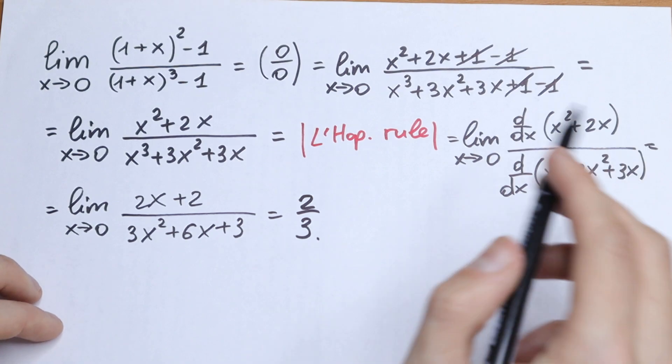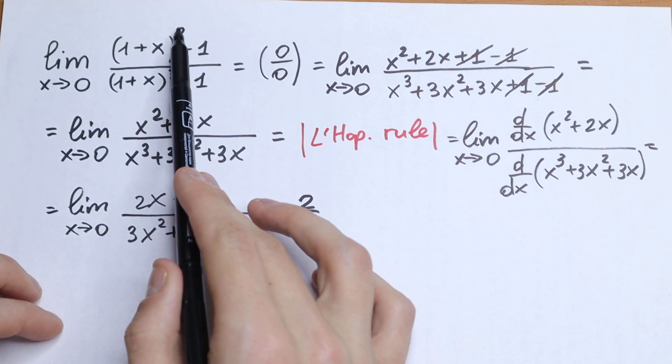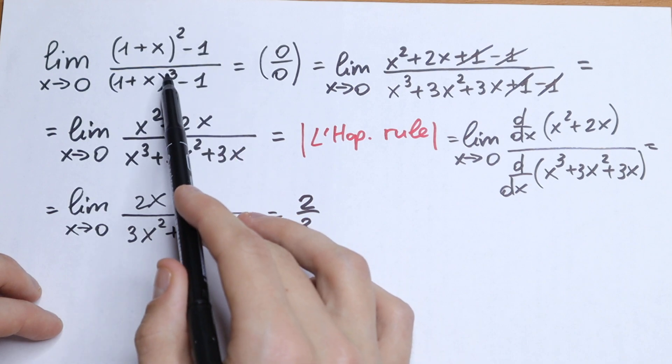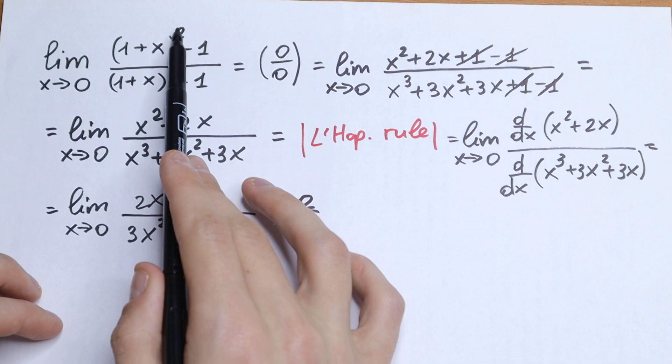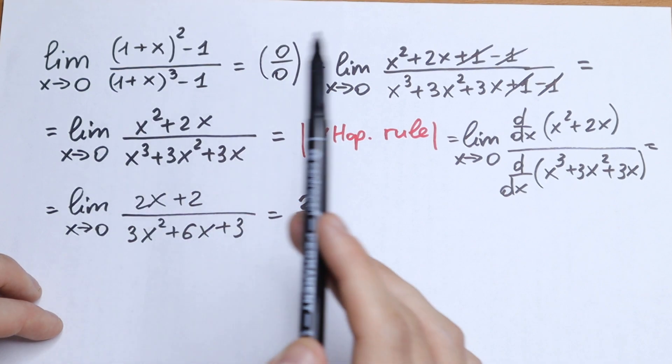Moreover, we can find this limit a little bit quicker, because this will be the dominant power of numerator, and this will be the dominant power of denominator. So we will see that the highest power will be 2x, and right here we will have 3x. So as a result we will have 2 over 3.